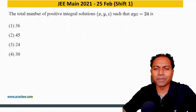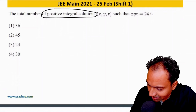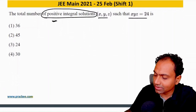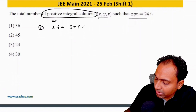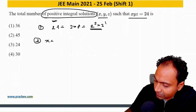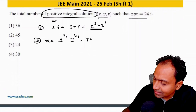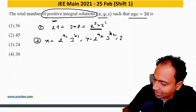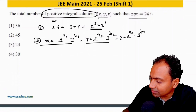This 2021 question is a typical classroom illustration. It asks for the number of positive integral solutions of x·y·z = 24. The method starts with prime factorization: 24 = 2³ × 3¹. We write x = 2^a1 × 3^b1, y = 2^a2 × 3^b2, and z = 2^a3 × 3^b3.